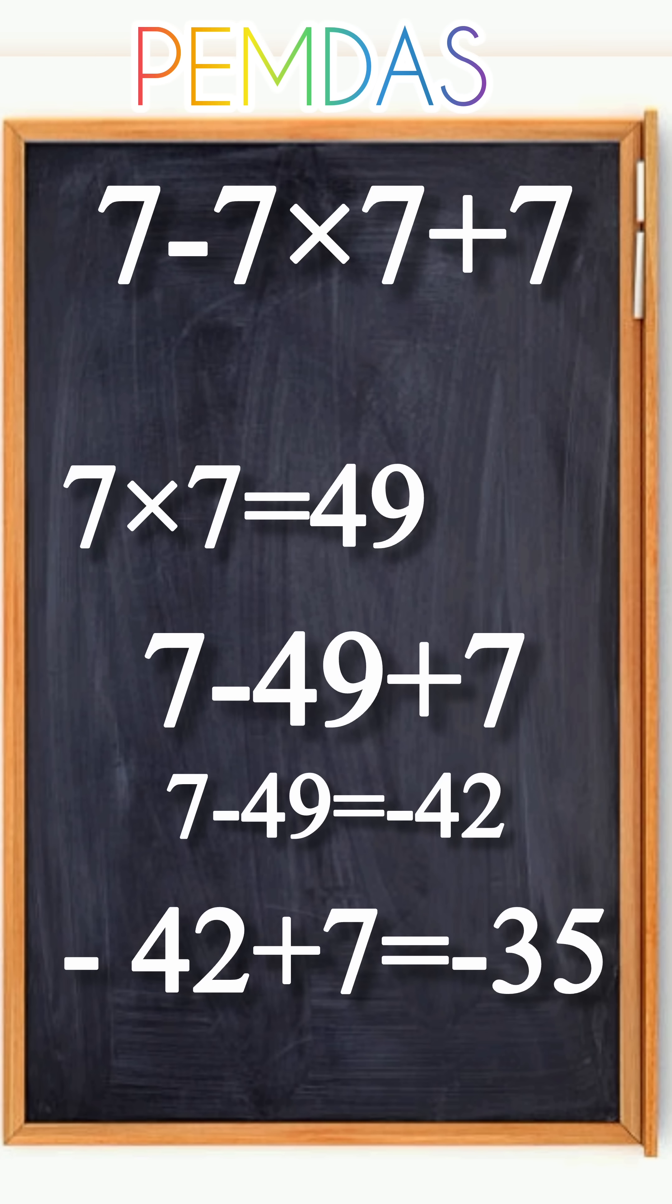So if you got 0, 7, or minus 49 before, you weren't wrong for trying—you just skipped the rule that keeps math fair. Always follow the order of operations, and always move left to right when operations are equal in rank.